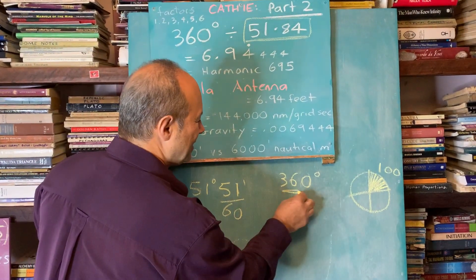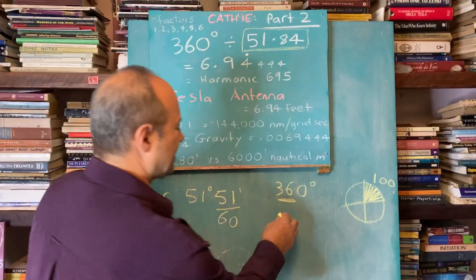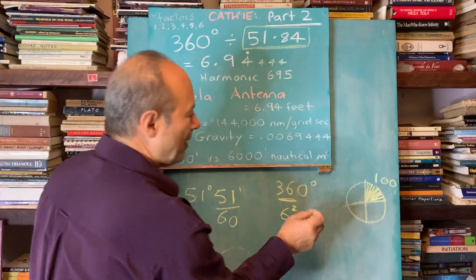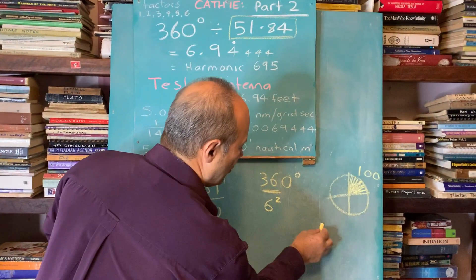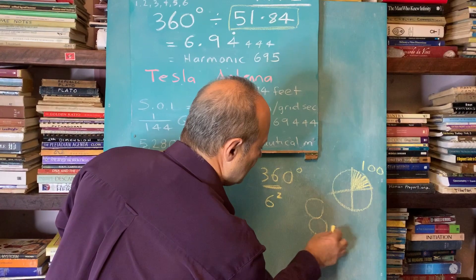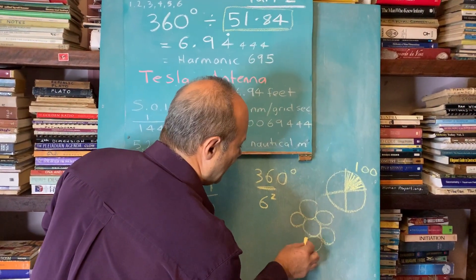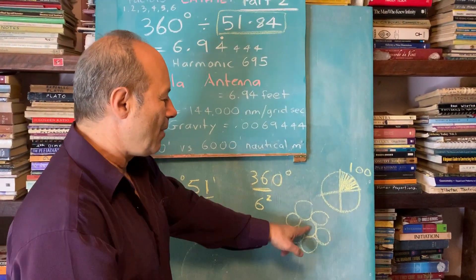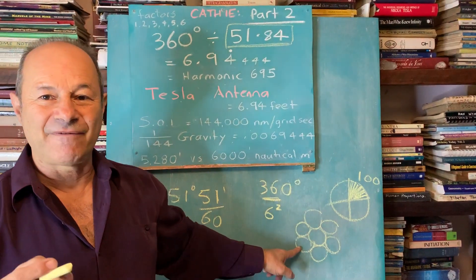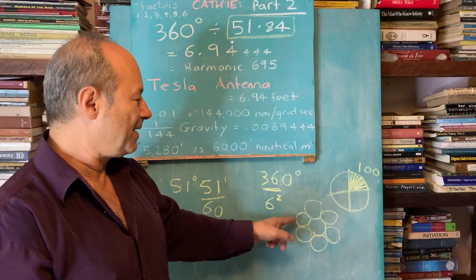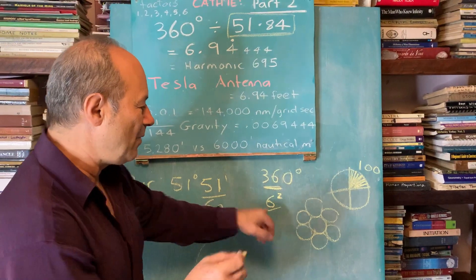The number 36 is really interesting because it's six squared. If you have a coin, there's one, two, three, four, five, six. When we fit six around the one, we reach a state of perfected order. There's something very special about six.